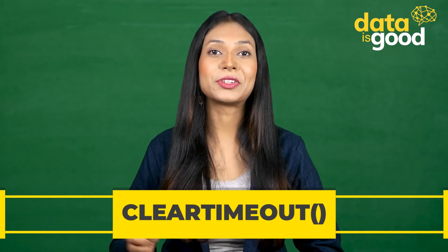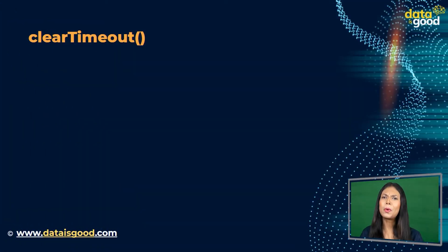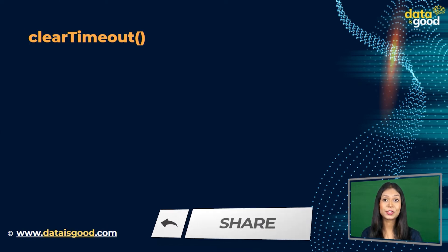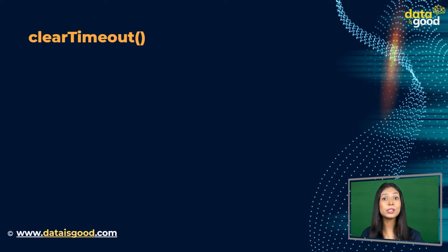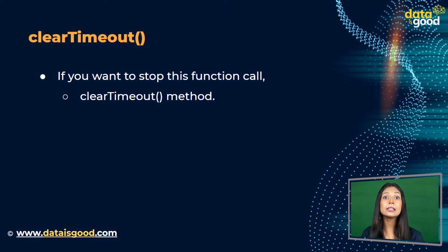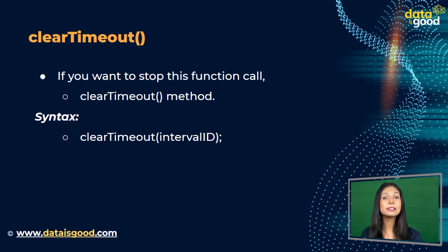Let's see the output. Open the console — you can see the time is being displayed every three seconds. This is how we use the setTimeout method. Now we are going to learn about the clearTimeout method. As you have seen, the program executes a block of code after the specified time interval. If you want to stop this function call, you can use clearTimeout.